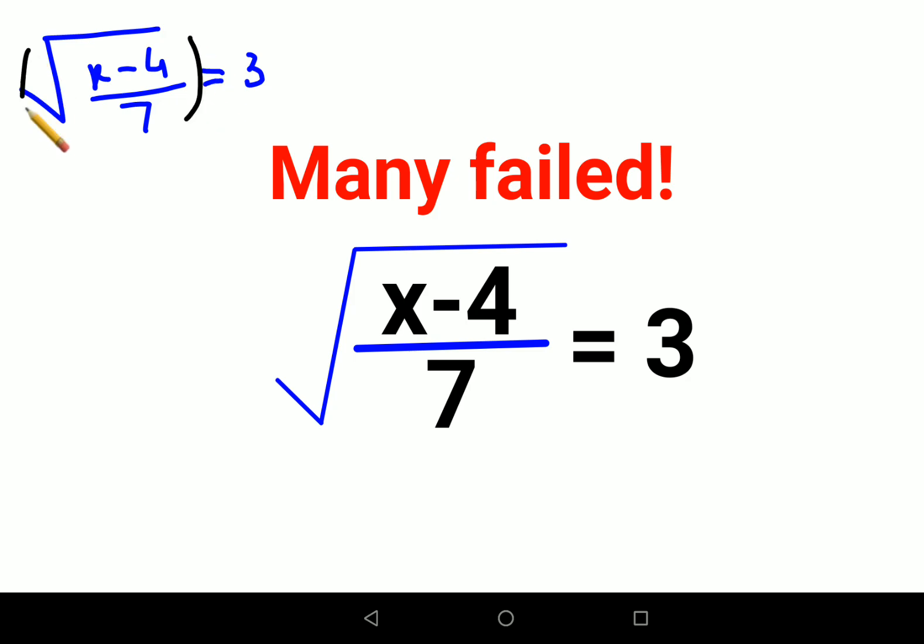Why? Because when the entire thing is under a root, the root and the square get cancelled. Why? See, root of a can also be written as a raised to 1/2.